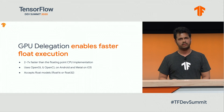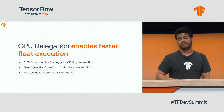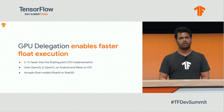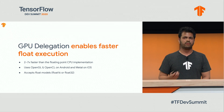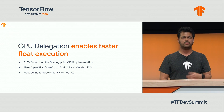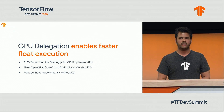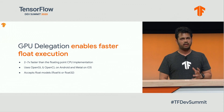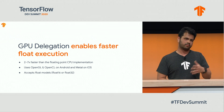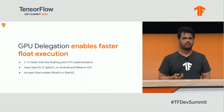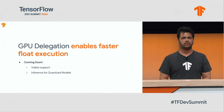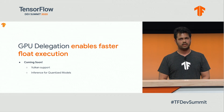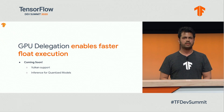Then we have our GPU delegate, which, as I mentioned before, gives up to seven times speedup on a lot of the vision models that involve a lot of convolutions and fully connected layers. It uses OpenCL and OpenGL on Android and Metal for iOS. Currently, it only accepts floating-point models, both 16-bit and 32-bit. We are working to add Vulkan support to the GPU delegate, as well as inference for quantized models. So stay tuned for that.